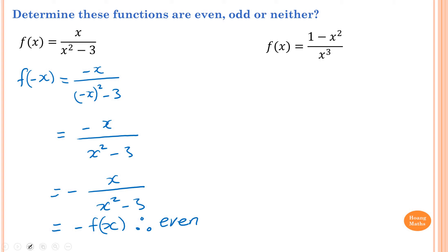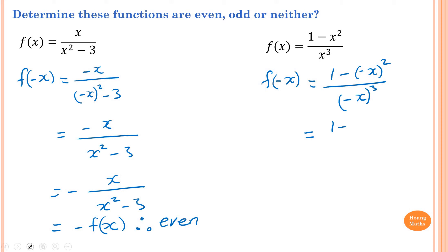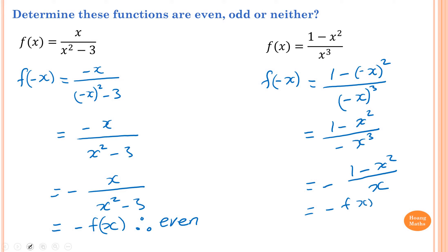Part 2: again, we find f(-x) first by substituting in. f(-x) equals 1 minus negative x all squared, all over negative x all to the power 3. This gives 1 minus x squared, all over negative x cubed. Bringing the negative up gives negative times (1 minus x squared) over x cubed, which is exactly negative f(x). Therefore the function is odd.